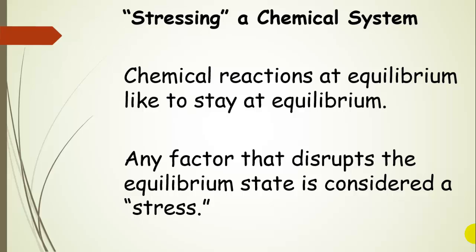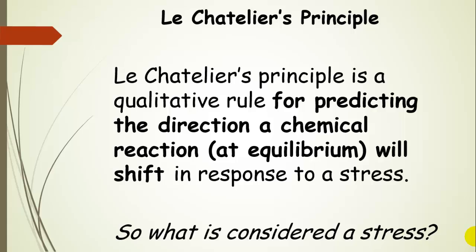Let's talk about stressing a chemical system. We're going to take a reaction that is at equilibrium and stress it. Chemical reactions that are already at equilibrium — and actually any system — like to stay at equilibrium. So if we do anything that disrupts this equilibrium state, it's considered a stress on that system. Le Chatelier's Principle is a qualitative rule for predicting the direction a chemical reaction at equilibrium will shift when we stress that system.